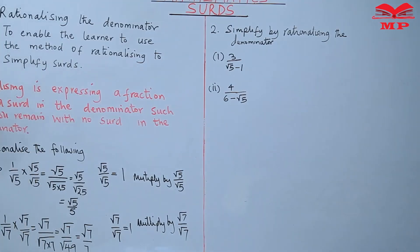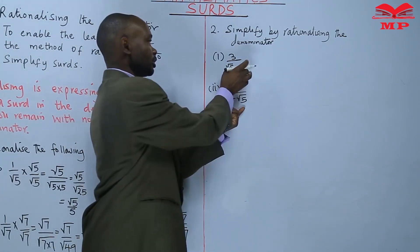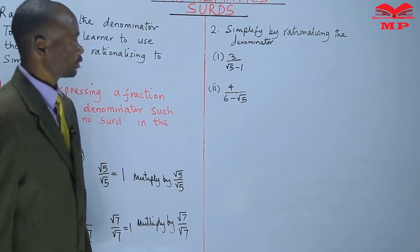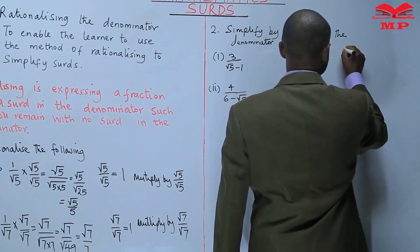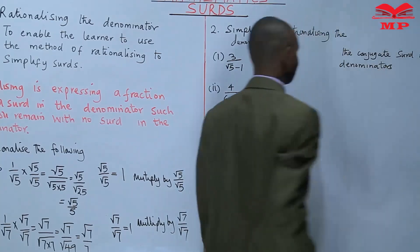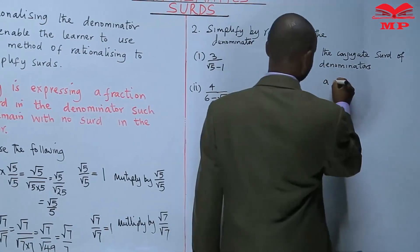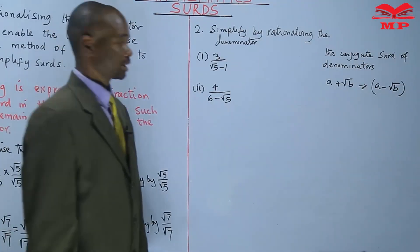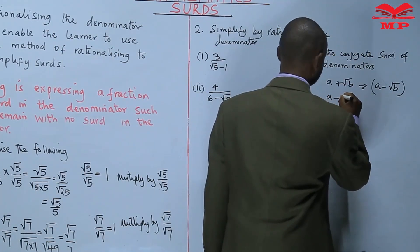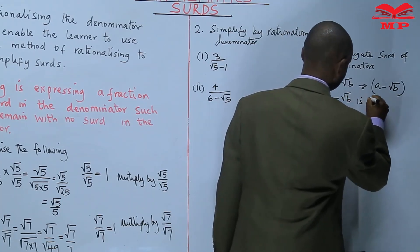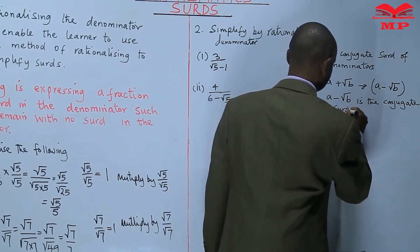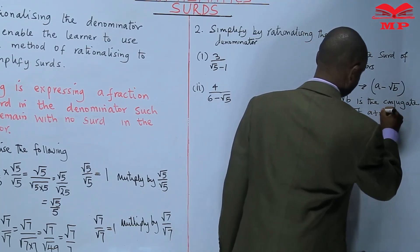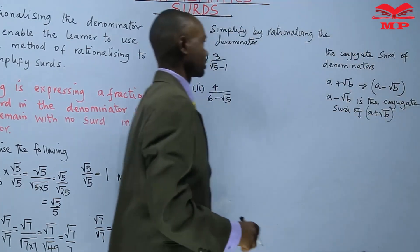Here it will be a bit different. There is something called a conjugate surd. You look for a conjugate to make sure that you don't remain with a surd in the denominator. You'll use a conjugate surd. So you realize a minus square root of b is the conjugate surd of a plus square root of b.